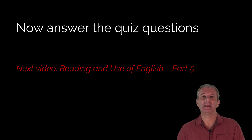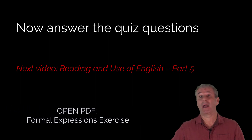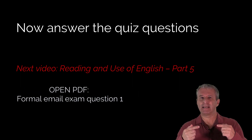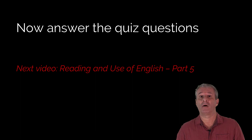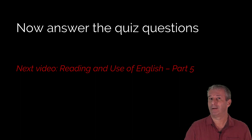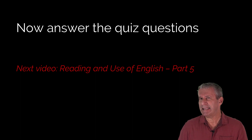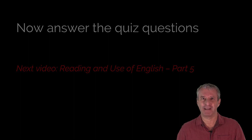Now let's see what you remember — take the quiz for this lesson and check your answers when you've finished. There's also a PDF version of the formal expressions exercise for you to print and repeat. In the support section there's an exam question you can answer, and a self-assessment sheet to check your writing. You also have the Cambridge Write and Improve website to get free AI-based feedback on your writing. In the next lesson we'll look at Reading and Use of English Part 5 — what kinds of questions are there, and what techniques and strategies can you use to do Part 5 effectively?